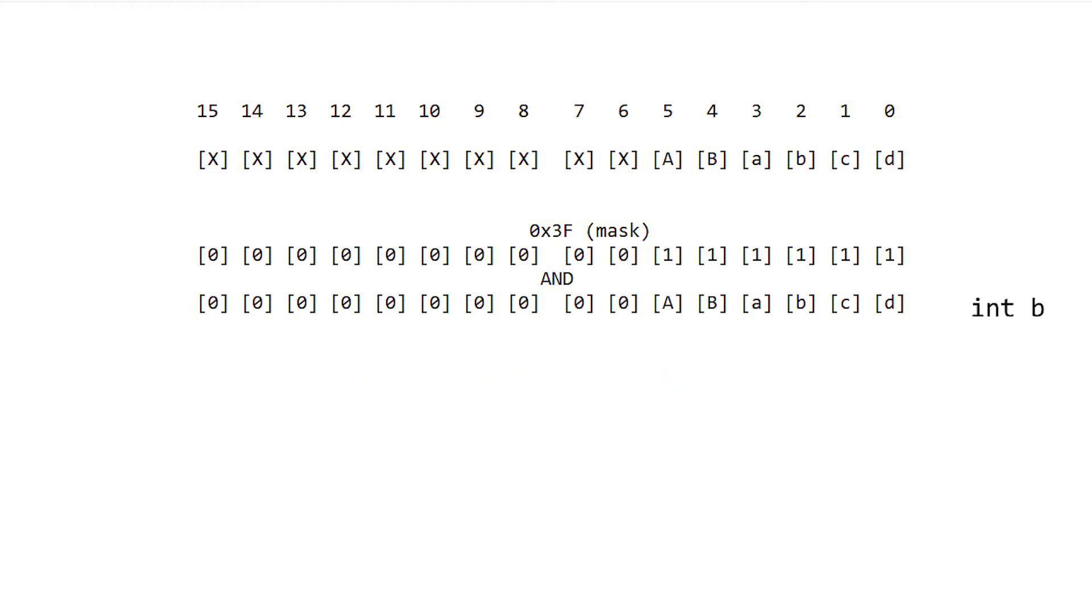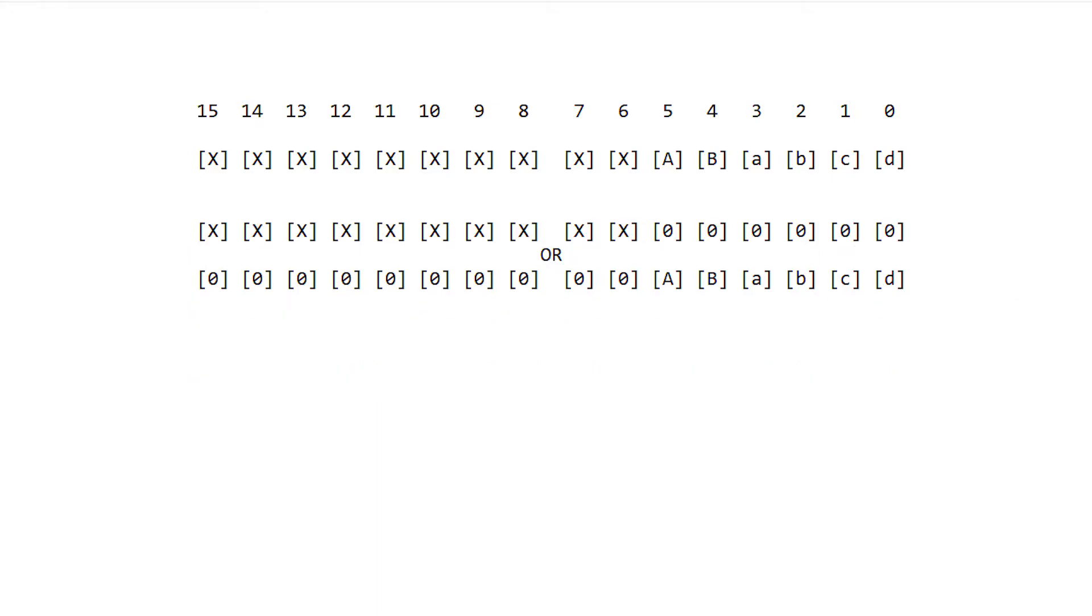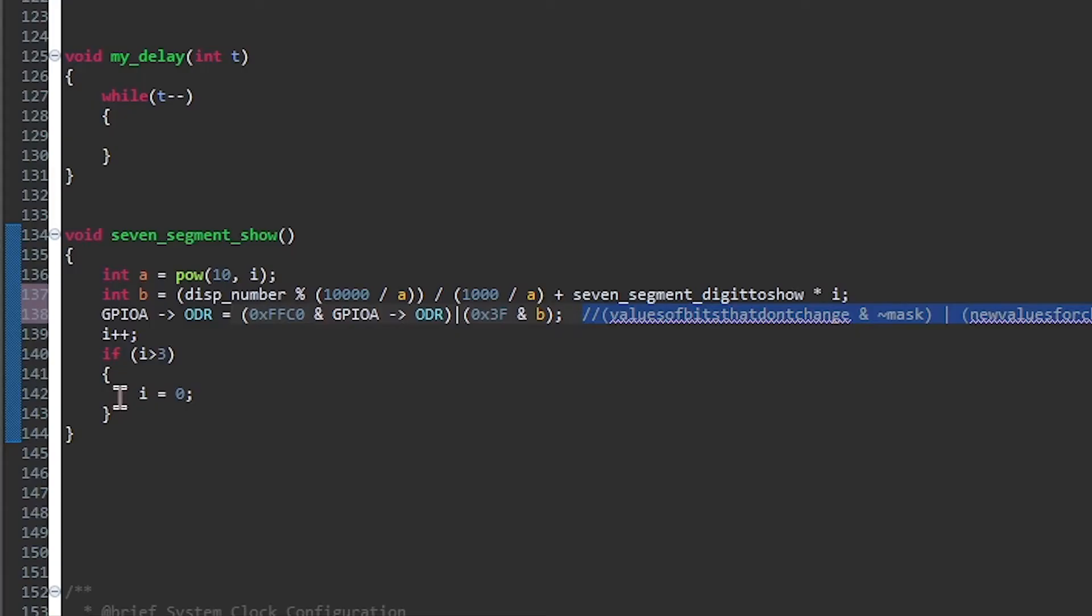Then we take a mask for our 6 bits and use AND operation with our variable B which contains information about the digit we are going to display. The result is that the first 6 bits contain information and the rest are 0. And finally, we combine both new values into a single one by using OR operator. And the result is a 16 bit number which has only the first 6 bits changed. And the rest of the code is just incrementing i from 0 to 3 in order to change digits in our display.